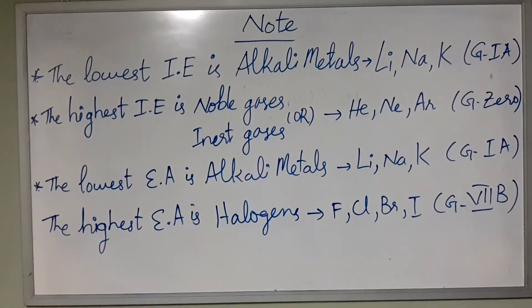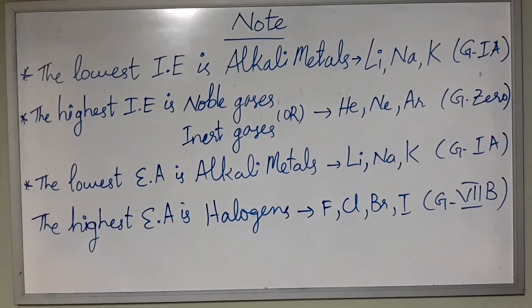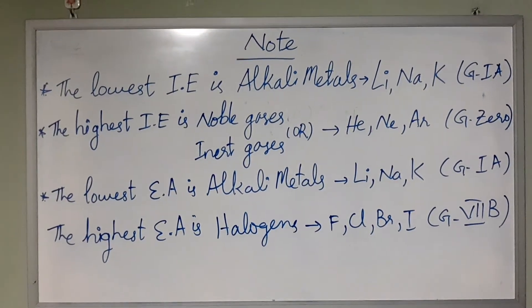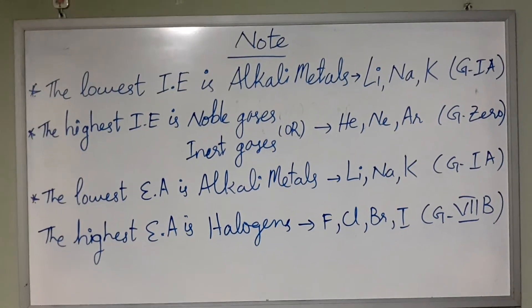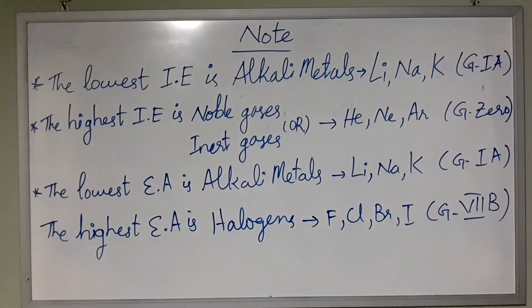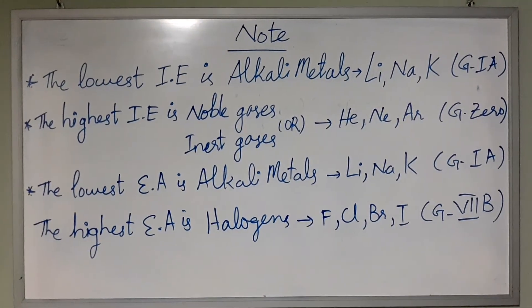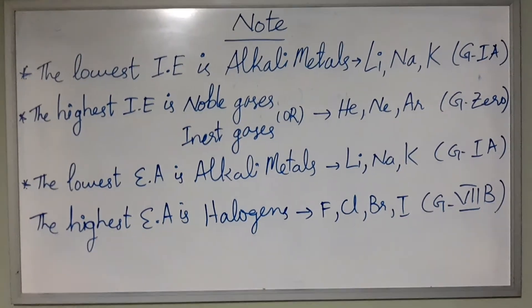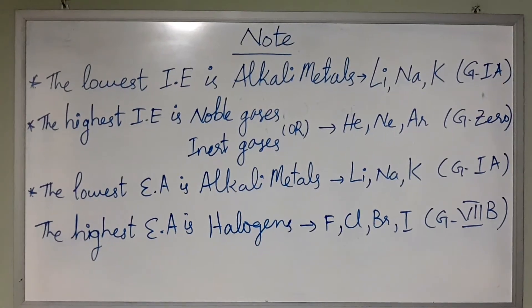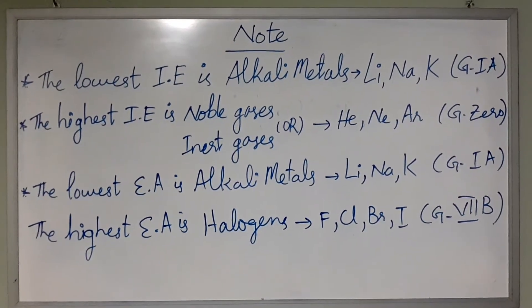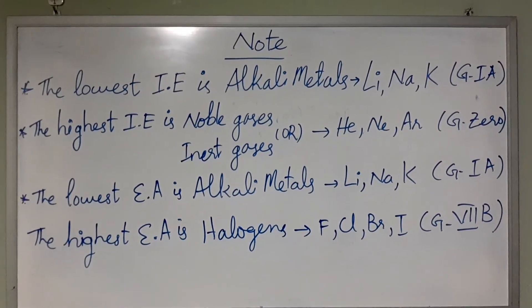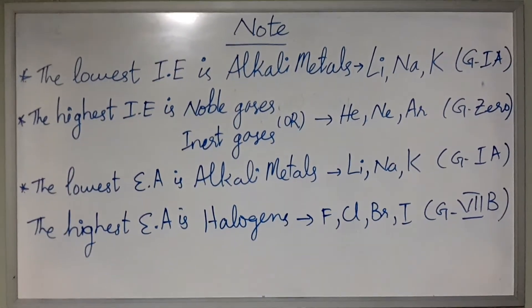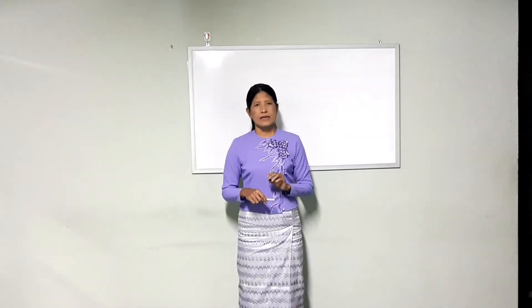The highest ionization energy belongs to noble gases or inner gases — He, Ne, Ar — group zero. The lowest electron affinity is alkali metals — Li, Na, K — group one A. The highest electron affinity is halogens — F, Cl, Br, I — group seven B. The highest ionization energy is ionization energy, and the highest electron affinity is electron affinity.